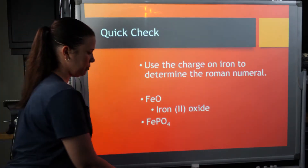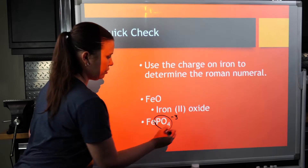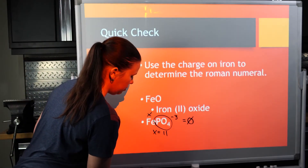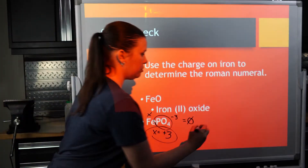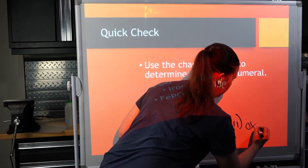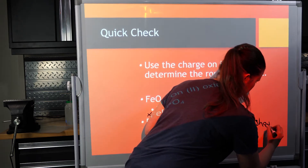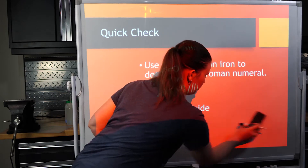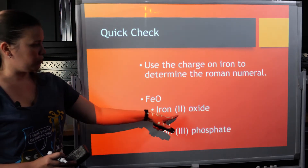Let's try one with a polyatomic ion. You should know your charges — that's our phosphate with a minus 3 charge. So what would iron need to be to neutralize a minus 3 charge? Iron would need to be plus 3. So now I know the iron needs a Roman numeral of III. We write iron(III), then phosphate. The point is that the iron gets a Roman numeral as a transition metal when you write the cation name — iron(III), and then our anion. Only transition metals need Roman numerals because the other atoms have set charges.